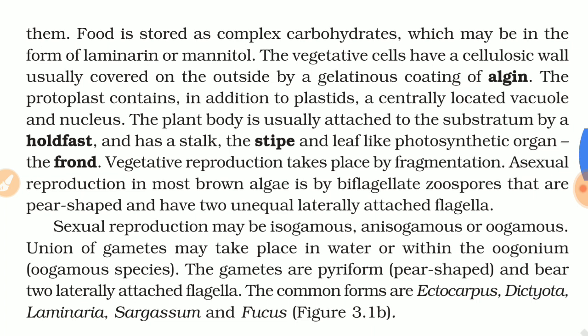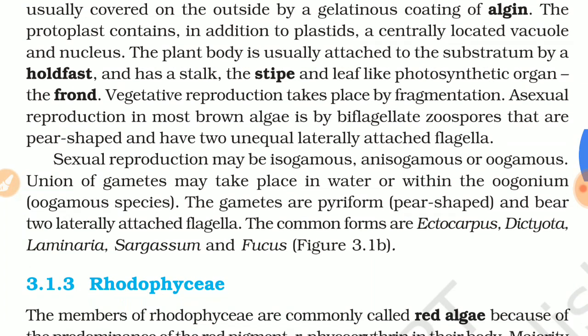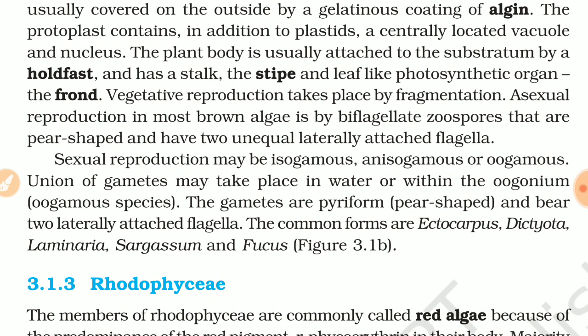Asexual reproduction in most brown algae is by biflagellate zoospores that are pear-shaped and have two unequally laterally attached flagella.